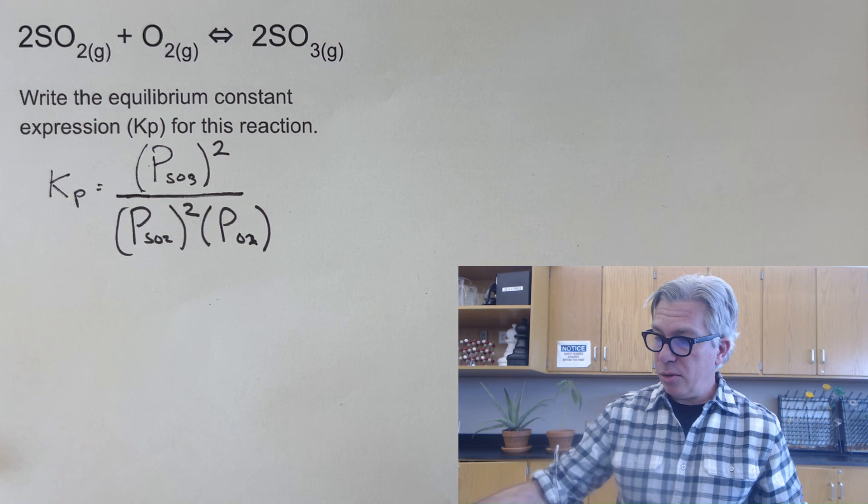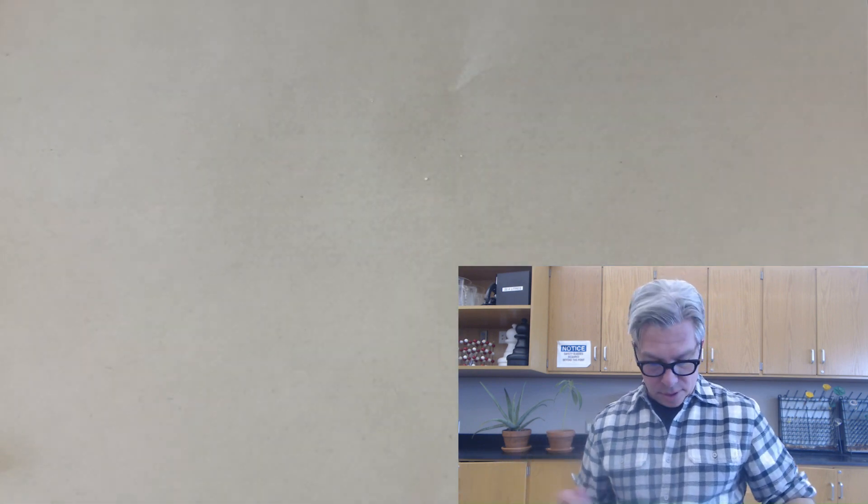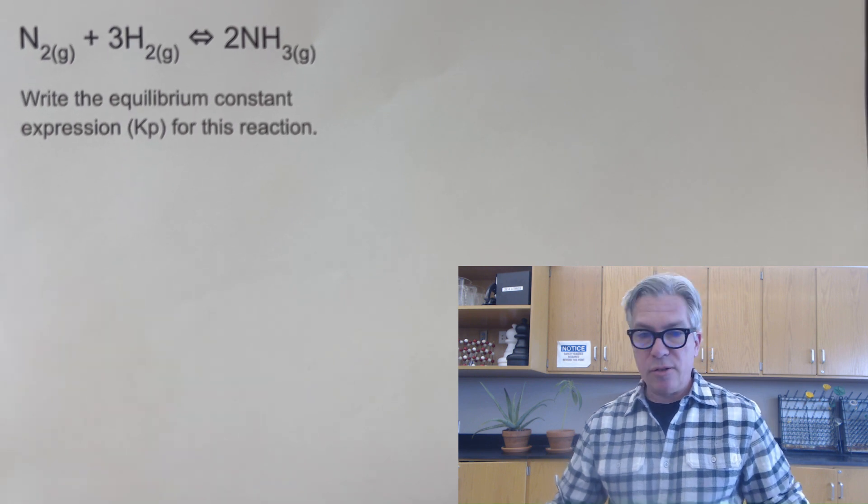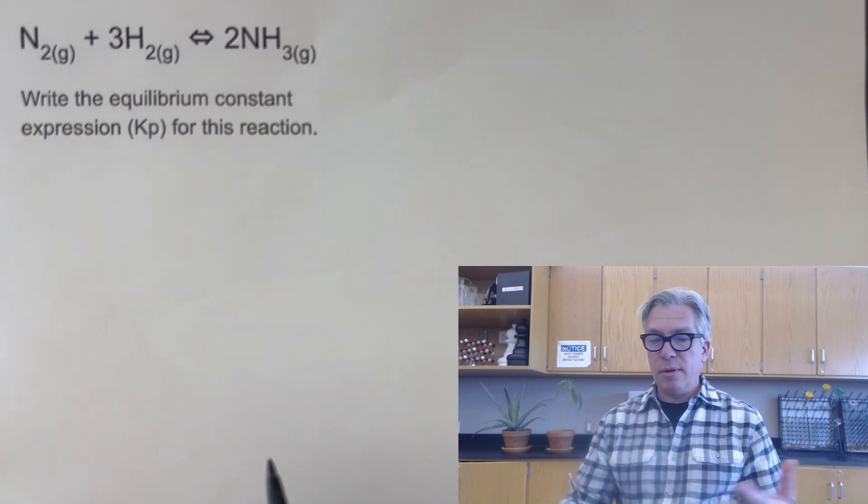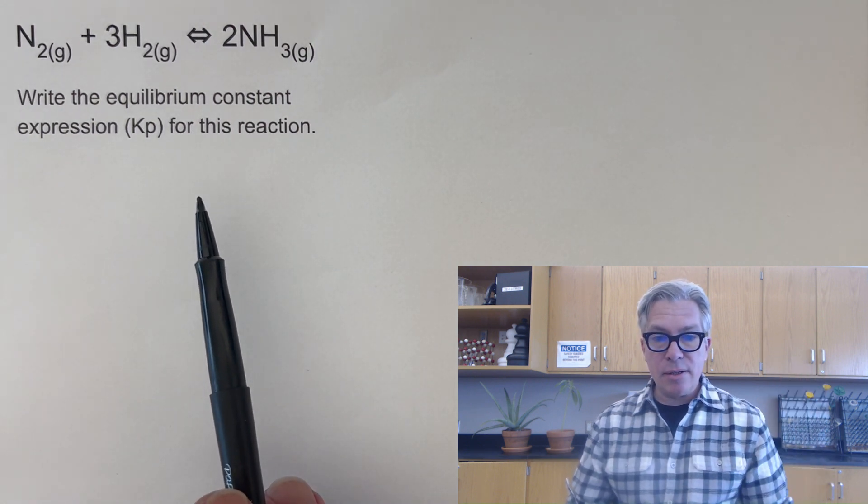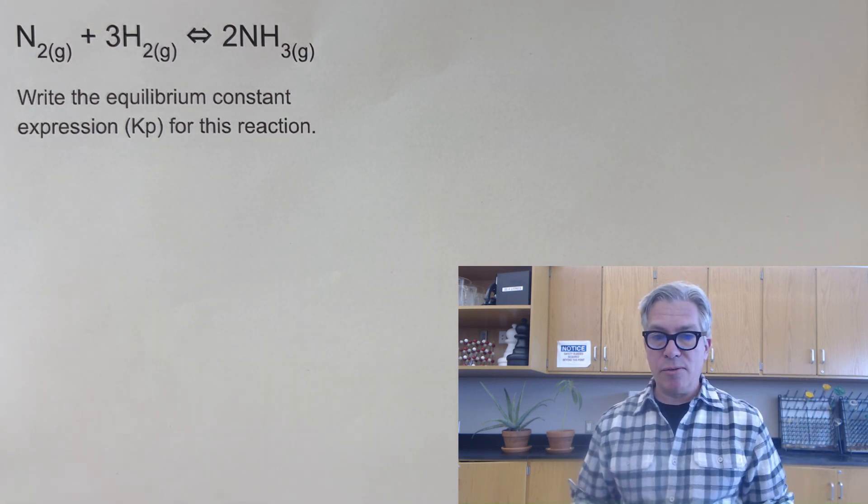So first pause the video moment. You go ahead and try this next one, really popular reaction. This is the reaction of producing ammonia, for example, in the Haber process. Take a moment and see if you can write the equilibrium constant expression for this reaction.